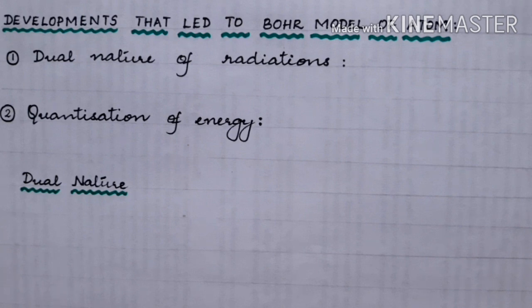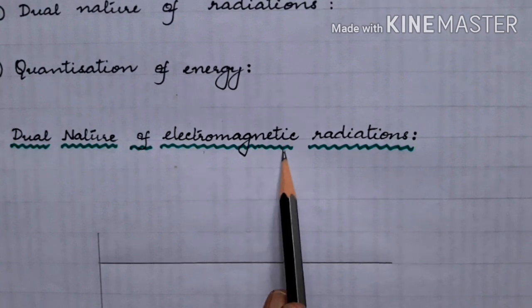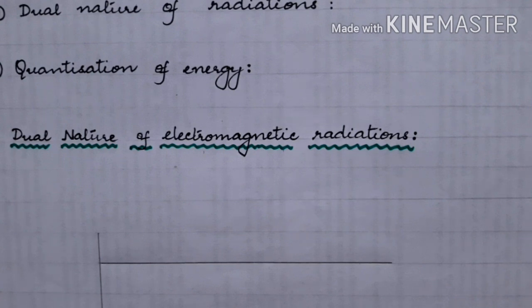We will see it one by one. First thing, what is dual nature? Dual means two types. Two types of behavior are shown by electromagnetic radiations. Electromagnetic radiations are those which have two types of components. One being the electrical component and the other one the magnetic component. You find that in electromagnetic radiations they travel in the form of waves and these components are perpendicular to one another.